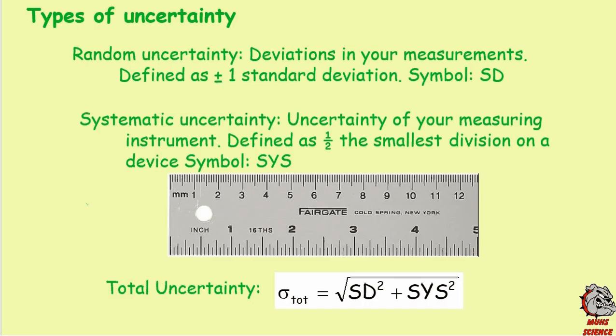This video is designed for physics class. We're going to talk about uncertainty and how to do something called error analysis, which college physics students absolutely love. When we talk about uncertainty, we're going to talk about two different types: the first is called random uncertainty.